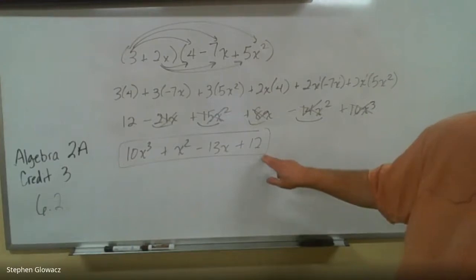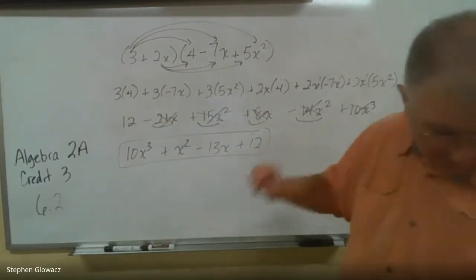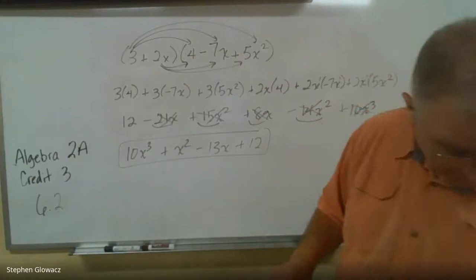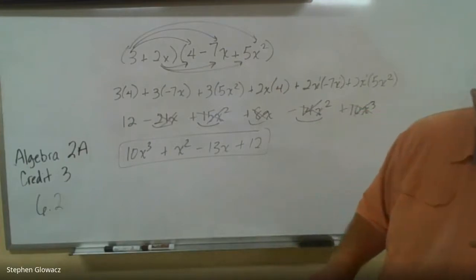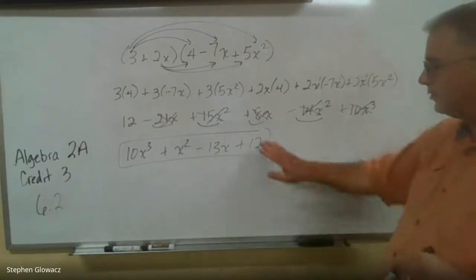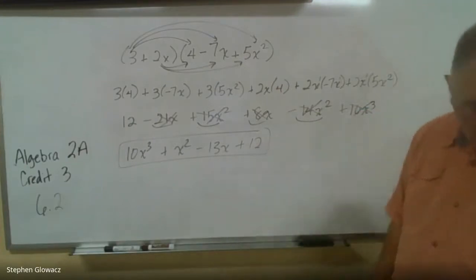So the answer is 10x³ + x² - 13x + 12. Let me just double-check the answer key — there's a little mistake in the answer key there, but yes, that checks out.